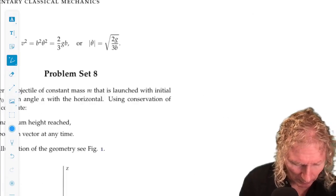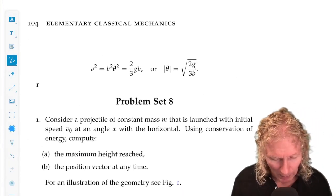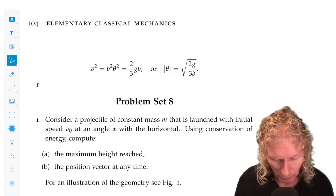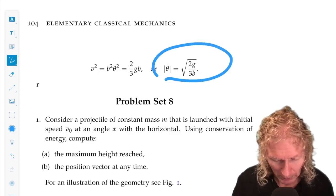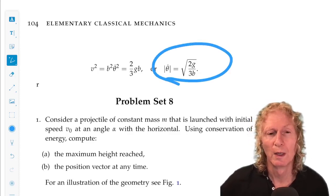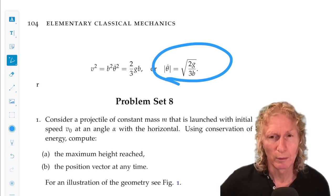And if we use the fact that v is b theta dot, we can easily relate that to get the expression for the angular velocity.